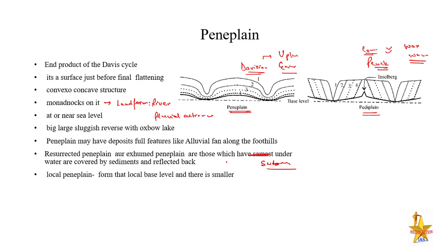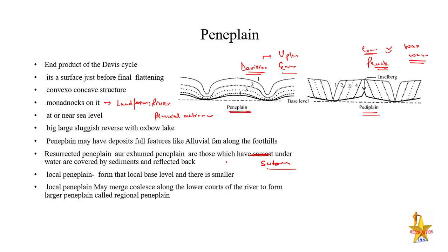Local Peneplains are formed because of local factors, mainly fluvial action, and are based on a local base level. They are not permanent — they are temporary and can be modified with the action of the river. Local Peneplains merge or coalesce along the lower course of the river to form larger Peneplains called regional Peneplains.